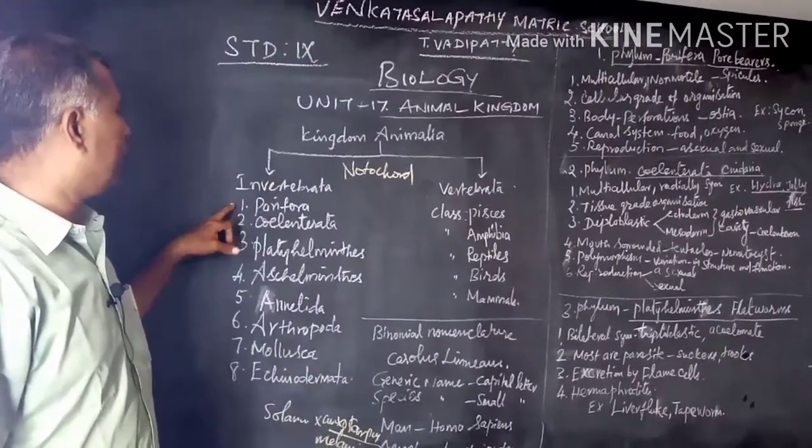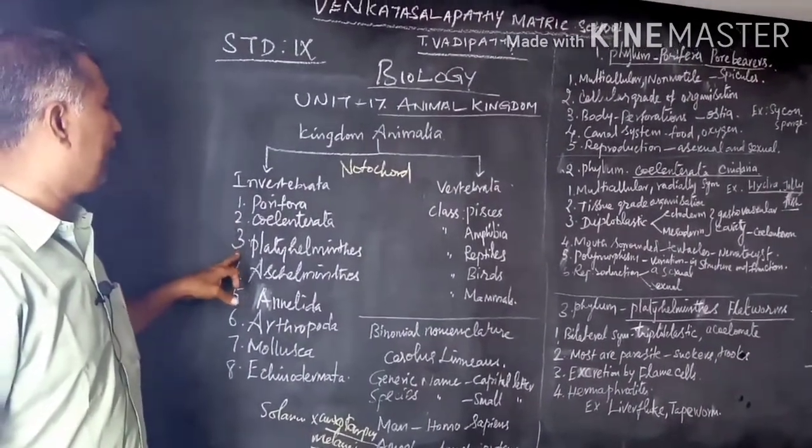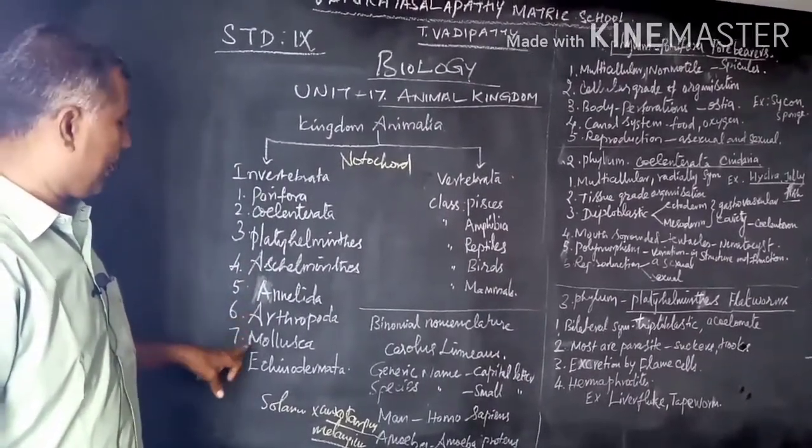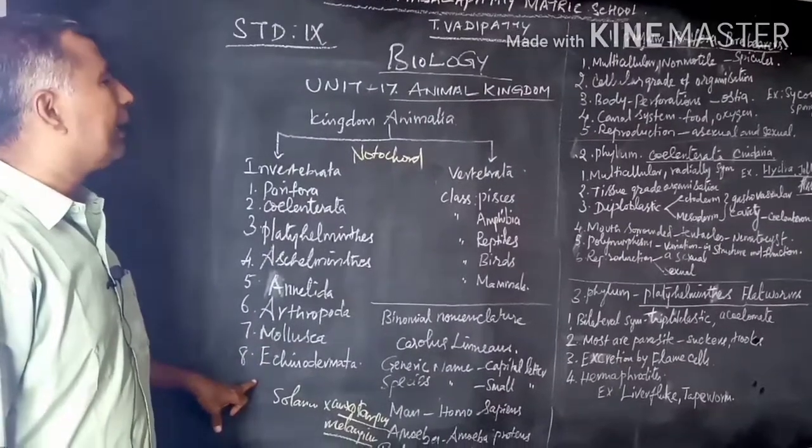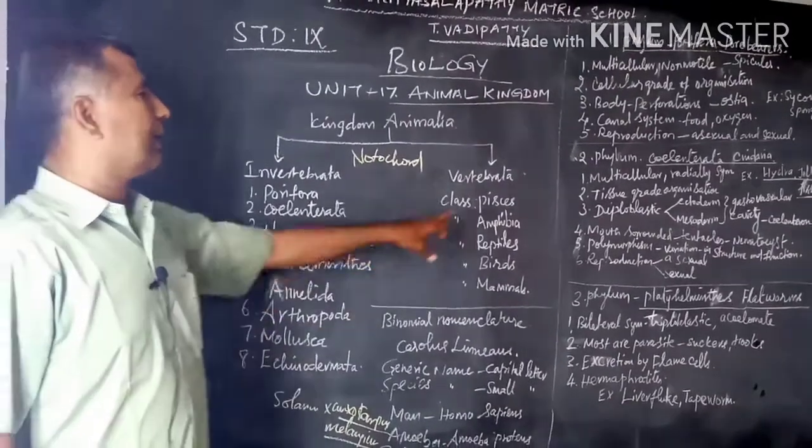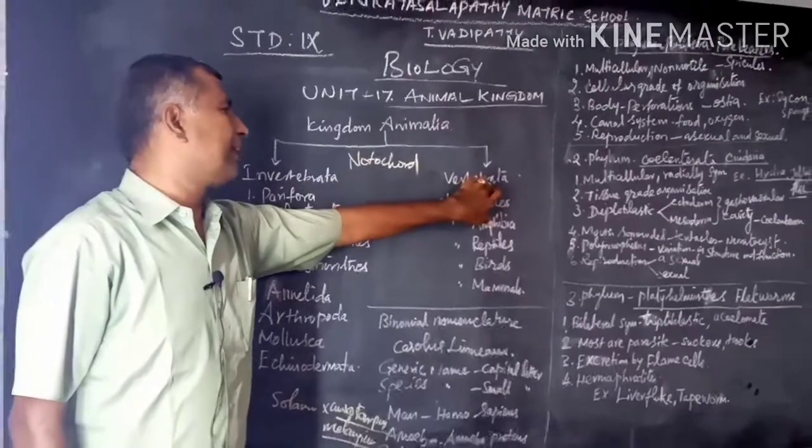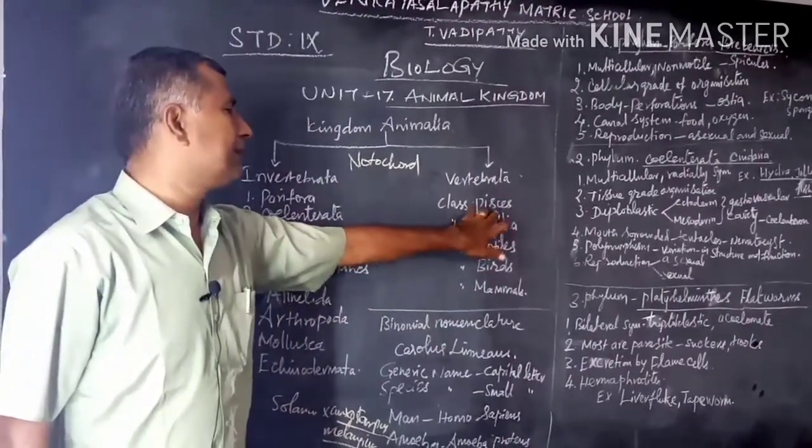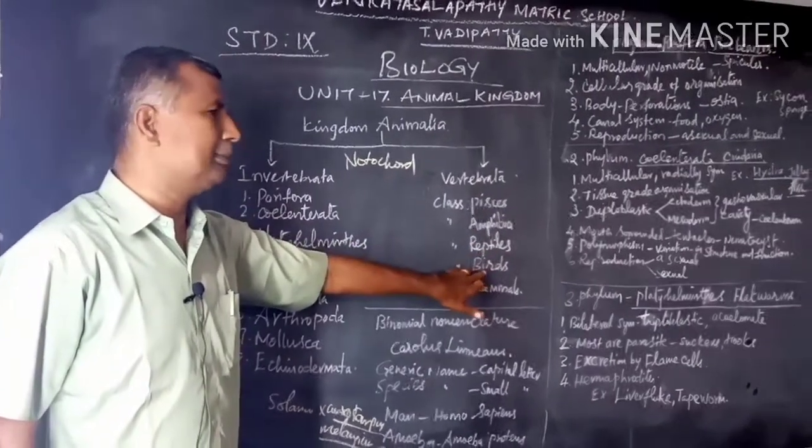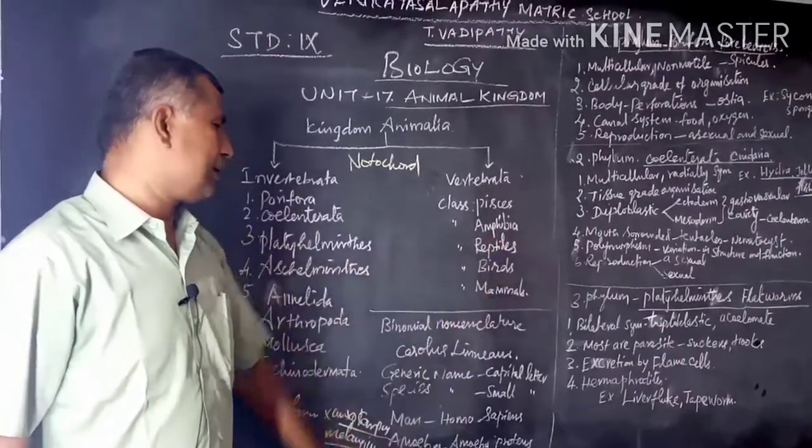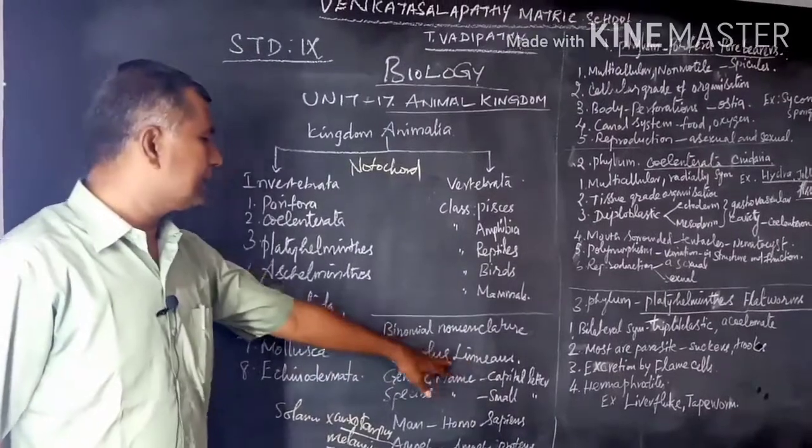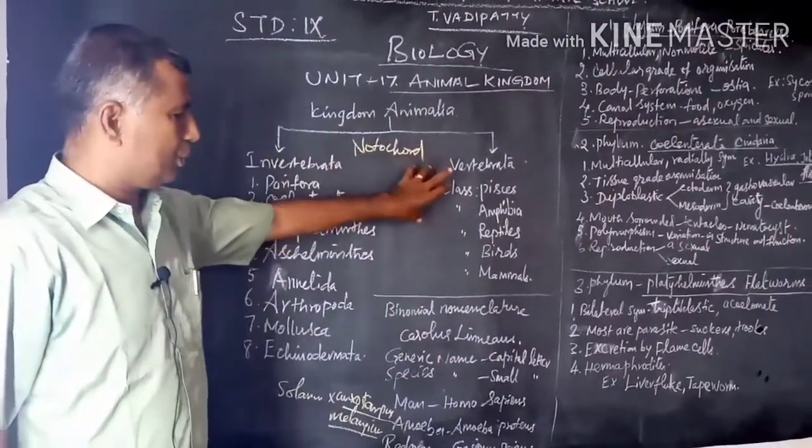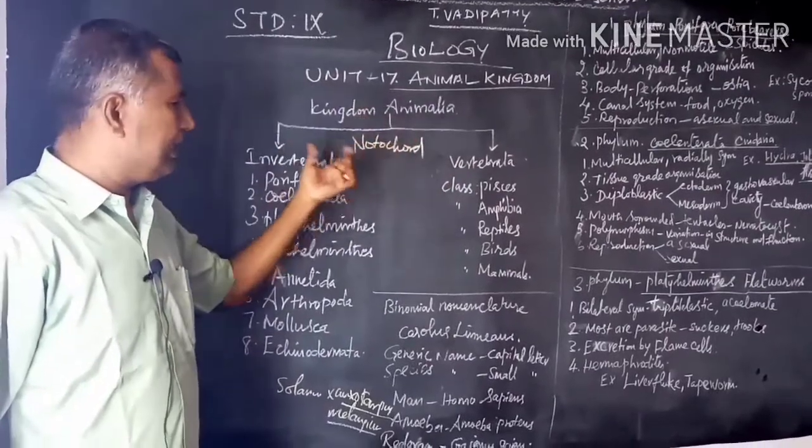The Invertebrata includes phylum Porifera, Coelenterata, Platyhelminthes, Aschelminthes, Annelida, Arthropoda, Mollusca, and Echinodermata. The kingdom Vertebrata includes five classes: Pisces, Amphibia, Reptilia, Aves, and Mammalia. Linnaeus classified the animal kingdom into two and named each and every animal.